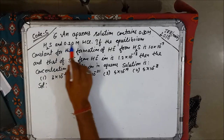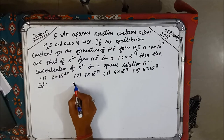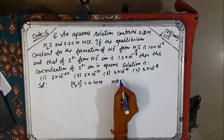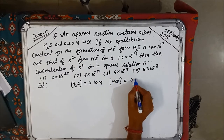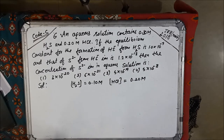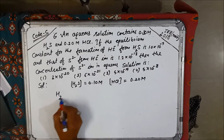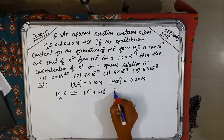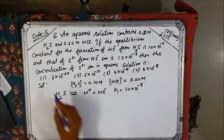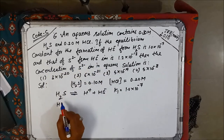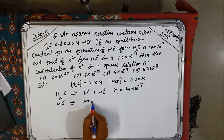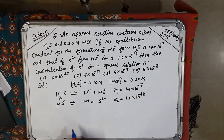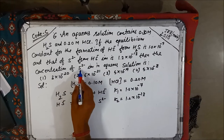In this case, an aqueous solution contains 0.1 molar H₂S, so the concentration of H₂S is 0.10 molar and concentration of HCl is 0.20 molar. The equilibrium constant for formation of HS⁻ from H₂S is 1.0 × 10⁻⁷, and for formation of S²⁻ from HS⁻ the value is 1.2 × 10⁻³⁰.